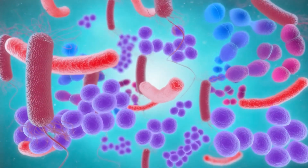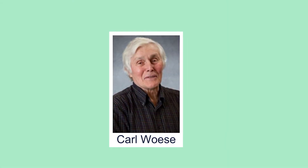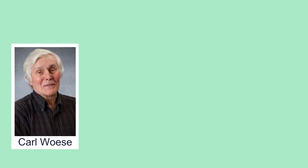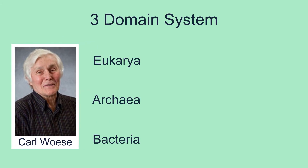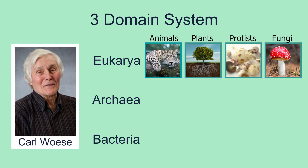In 1990, three domains of life were introduced by Carl Woese and his associates. These domains were called Eukarya, Archaea, and Bacteria. Domain Eukarya includes animals, plants, protists, and fungi.